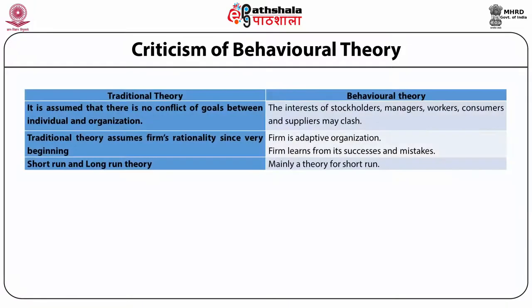In traditional theory, it is assumed that there is no conflict of goals between individual and organization. Whereas in behavioral theory, the interests of stakeholders — managers, workers, consumers, and suppliers — may clash. Traditional theory assumes firm rationality from the very beginning, whereas in behavioral theory, the firm is an adaptive organization that learns from its successes and mistakes.